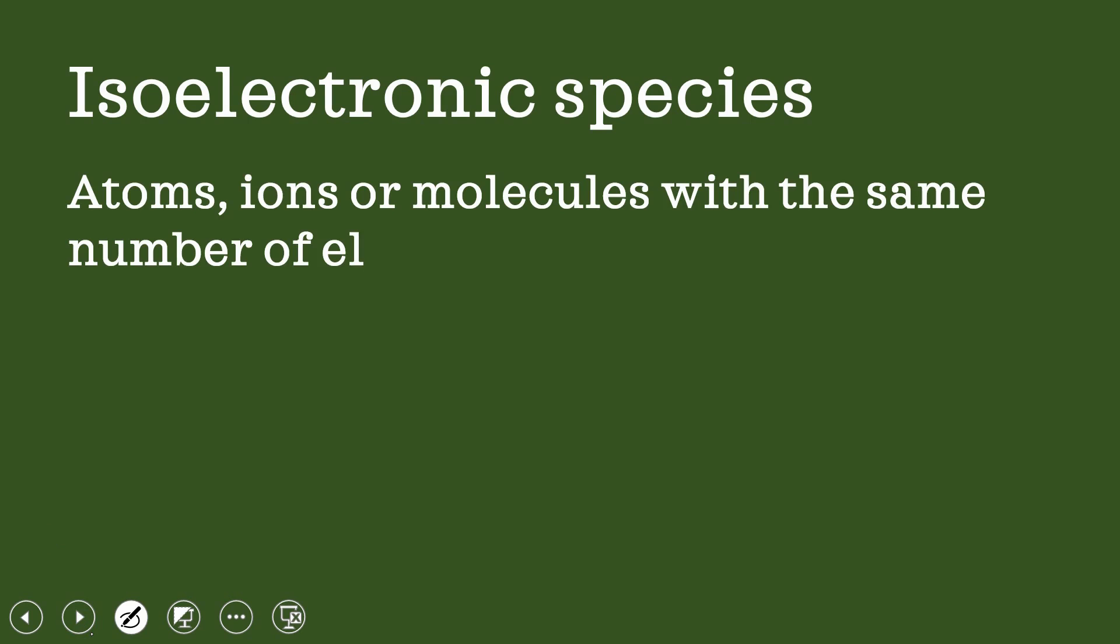Isoelectronic species are species with equal number of electrons. Atoms, ions, or molecules with the same number of electrons are called isoelectronic species. It may be an atom, an ion, or a molecule.